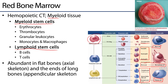Red bone marrow is abundant in the axial skeleton — the flat bones of the skull, the scapulae, the coxal bones of the pelvis, the sternum, and the bodies of the vertebrae. Here we can see the head of the femur, which is in the appendicular skeleton, and the ends of long bones are where red bone marrow is stored. It's in the diaphysis or shaft of long bones where we see yellow bone marrow, which stores lipids.